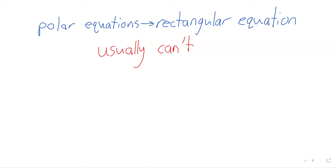We usually cannot take a polar equation and rewrite it as a rectangular equation. Even something like this, which seems to be about as ridiculously simple as an equation can get. There is no way for us to take this and rewrite it as a rectangular equation.